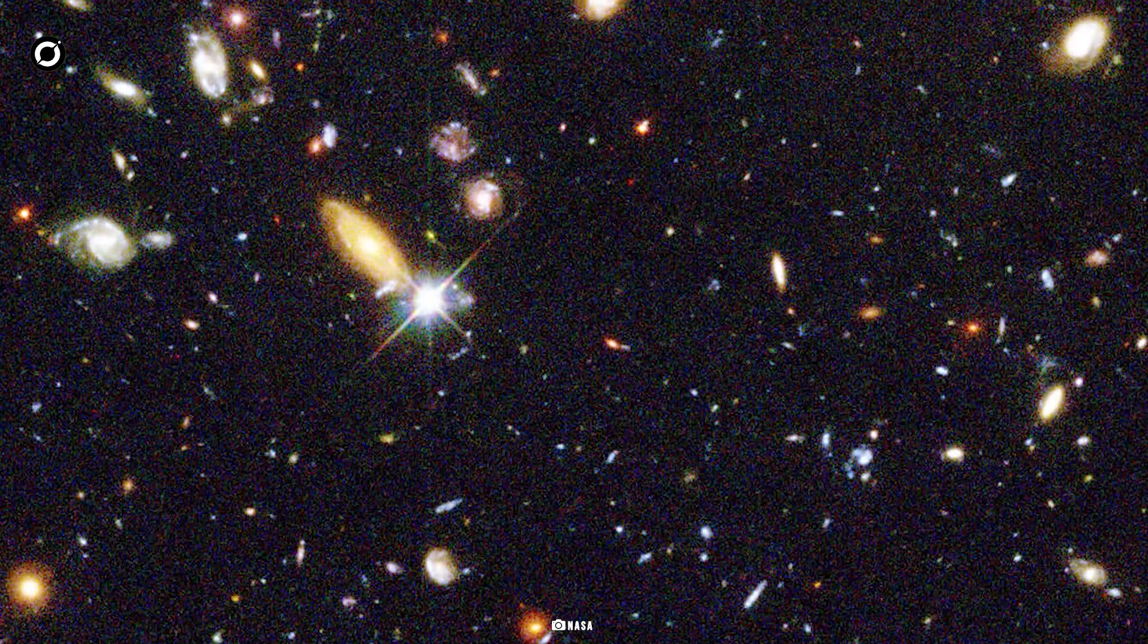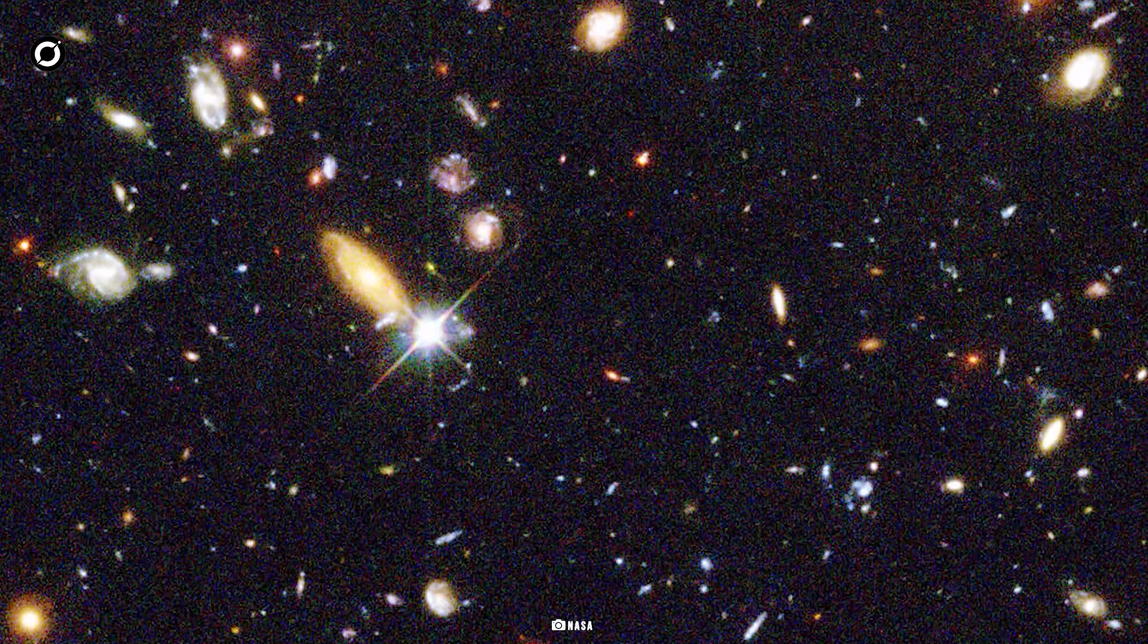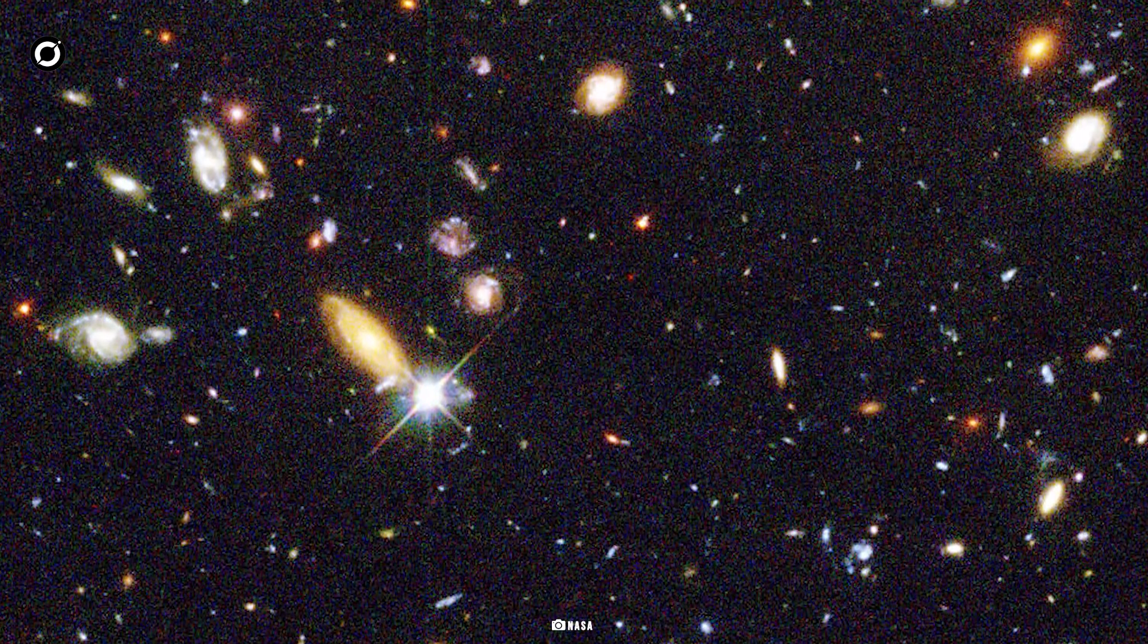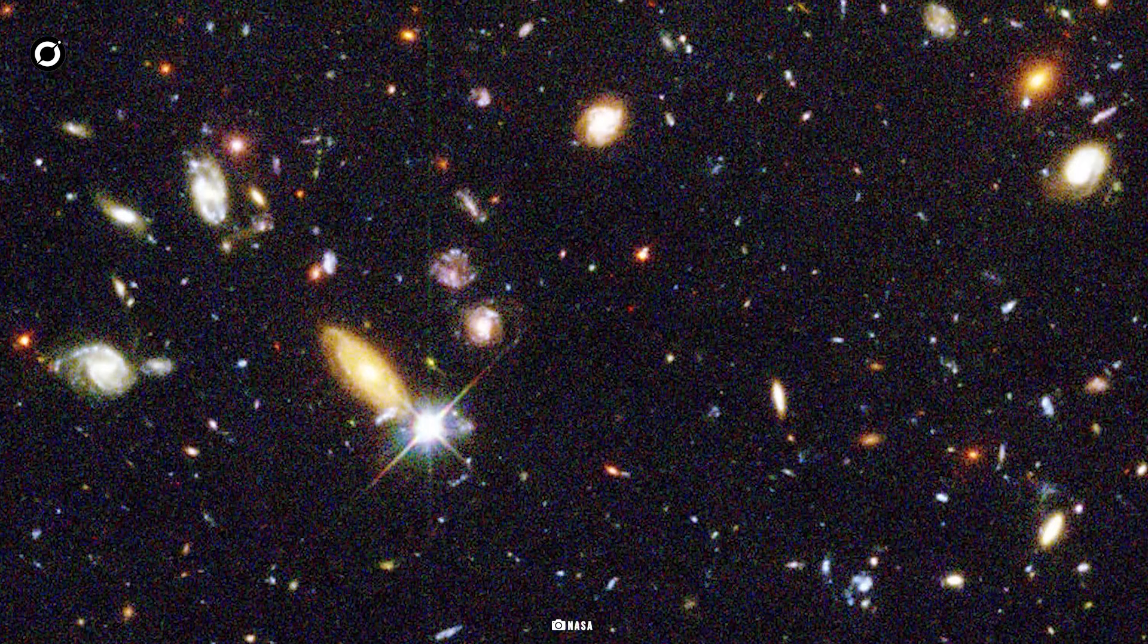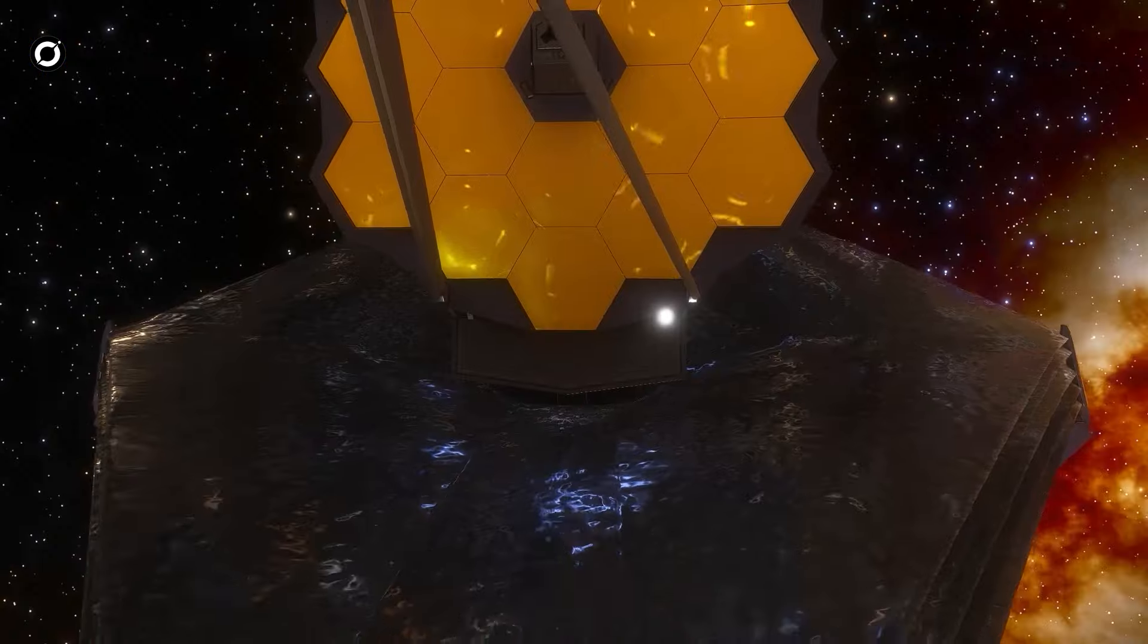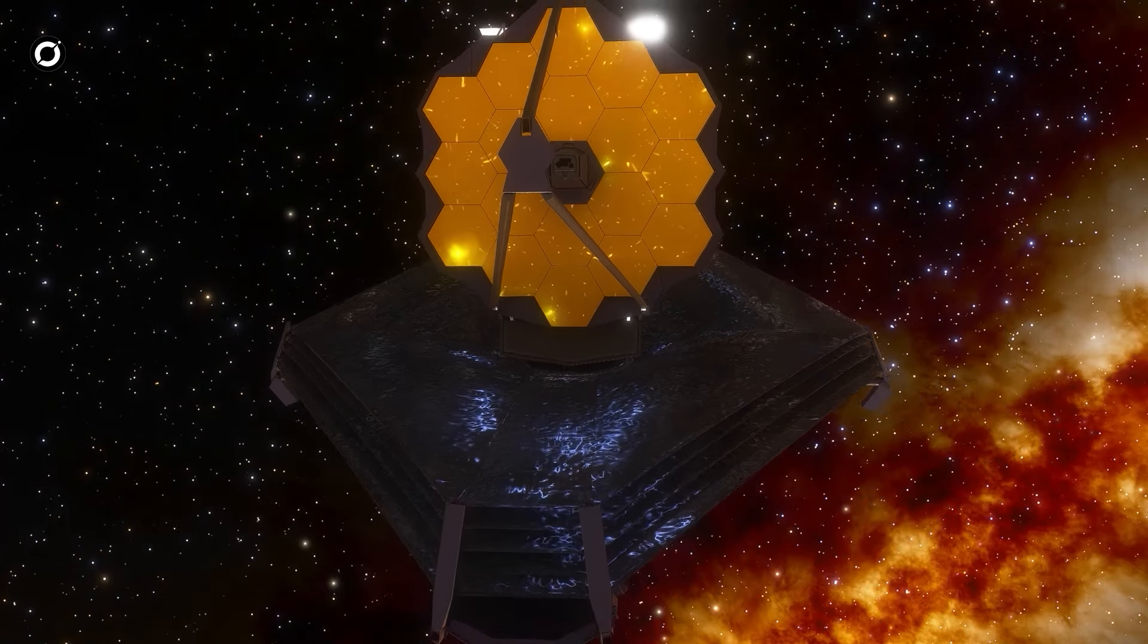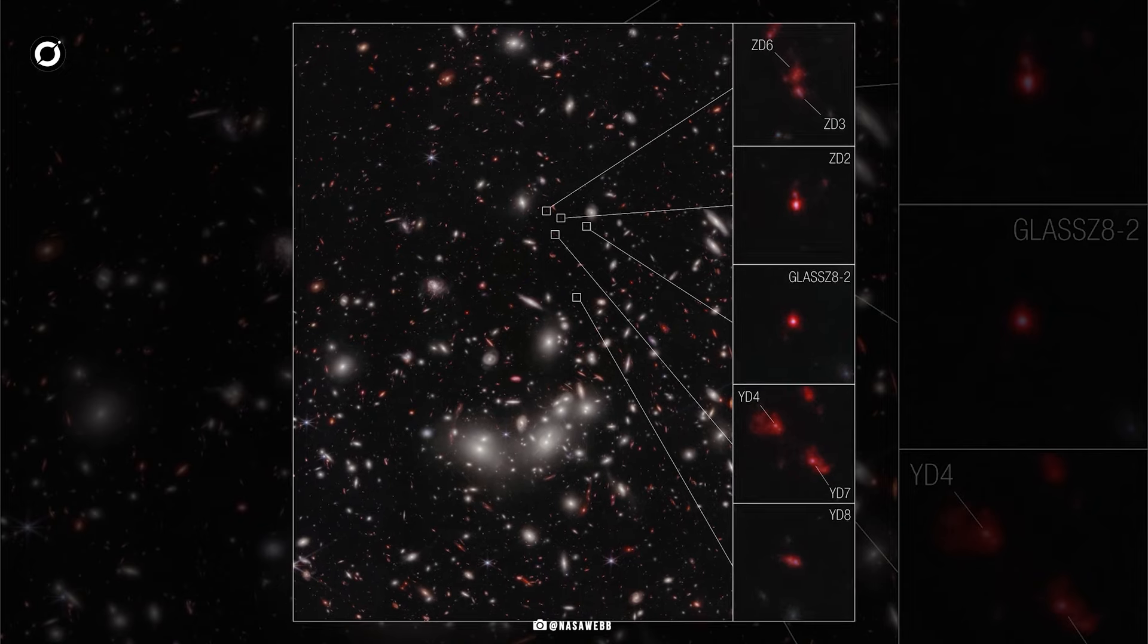All seven galaxies in the clump had been observed before with the Hubble Space Telescope, but scientists didn't know how far away they were or whether they were truly bound together. Because light takes time to travel from distant objects to Webb's position orbiting the sun, the telescope sees these galaxies as they were about 650 million years after the Big Bang.